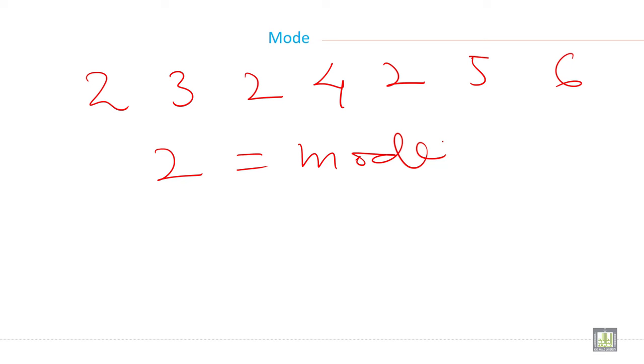But for example, suppose you have, this is called unimodal. When you have one mode, this is called unimodal.